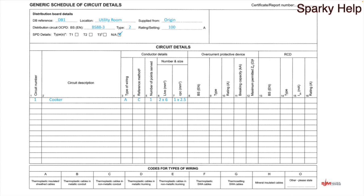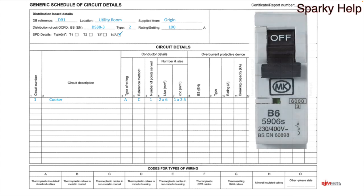Then we move on to the overcurrent protective devices. The first column is the BSEN number — you need to look at the device you've actually got. Here's a snippet of one: the BSEN is 60898, so we put that information in. Then we look at the circuit breaker for the type — it says B. There is a B, C, and D — watch out for a further video on what B, C, and D actually mean. But here we have a type B that goes in. That's where that information comes from.